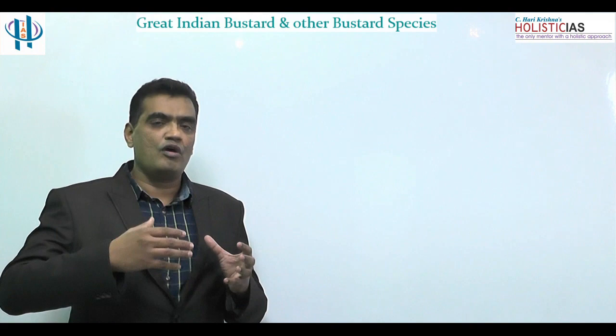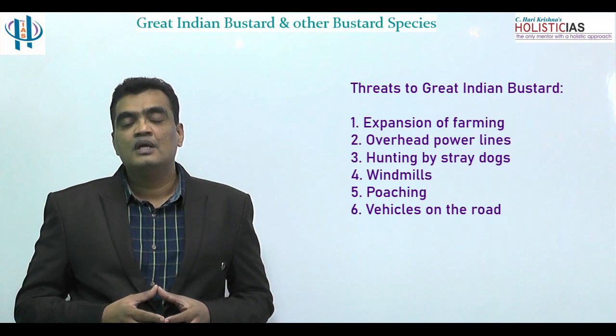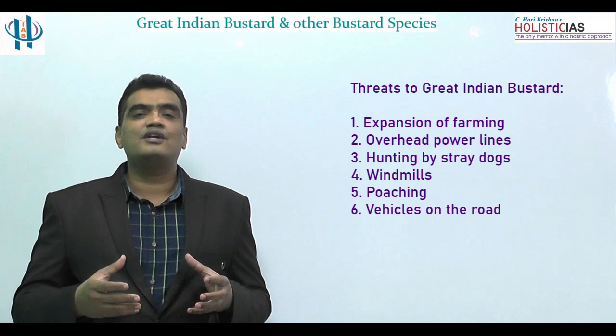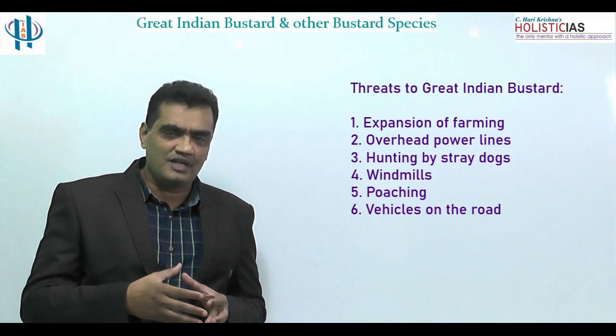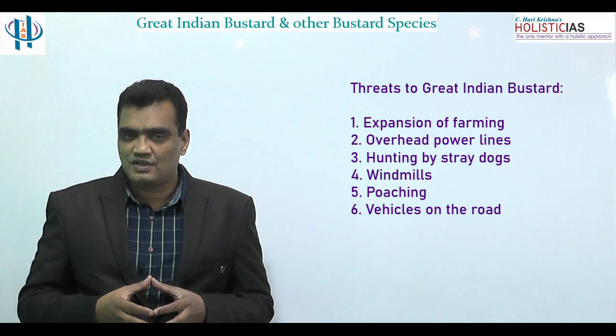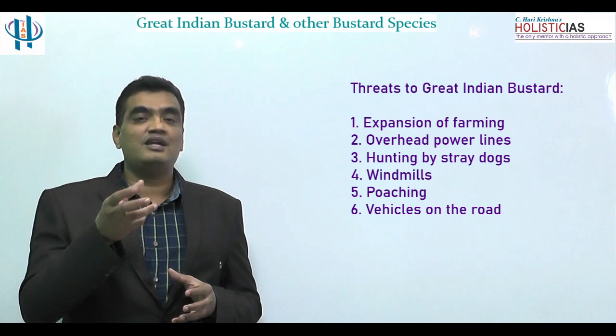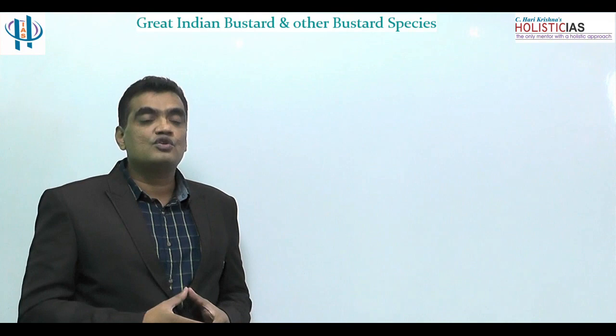The Great Indian Bustard faces many threats. Poaching has been prevalent from the beginning, including in adjacent areas of Pakistan where the bird is also found. Overhead power lines, irrigation expansion particularly in the Indira Gandhi Canal region, windmills, road accidents, and stray dogs all pose dangers. Additionally, when the birds eat locusts or other insect pests killed by pesticides, the birds themselves are reported to die due to pesticide contamination. There are thus many threats associated with the Great Indian Bustard today.